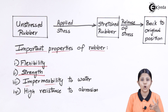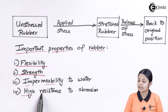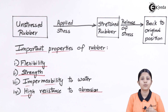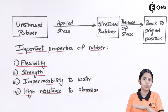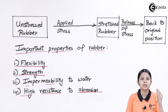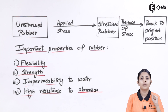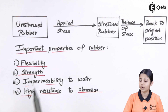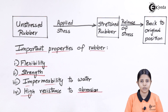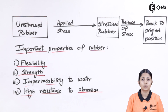The fourth property is high resistance to abrasion. Abrasion is a kind of corrosion or decomposition. If you take rubber and put it under atmospheric temperatures, it will not get abraded or corroded because it will not react with anything in the atmosphere and will not decompose. So the important properties are: elasticity, flexibility, strength, impermeability to water, and high resistance to abrasion — and all of these are equally important.